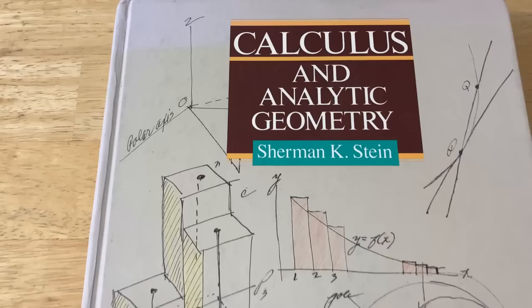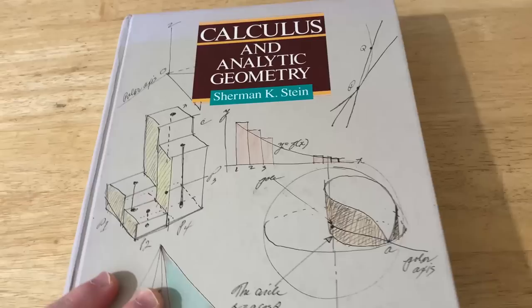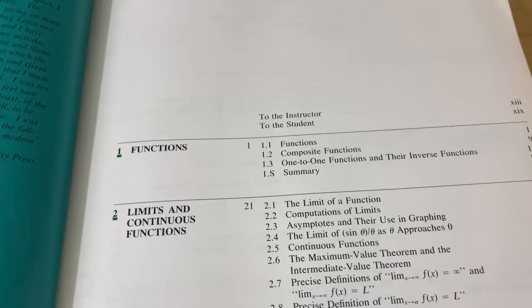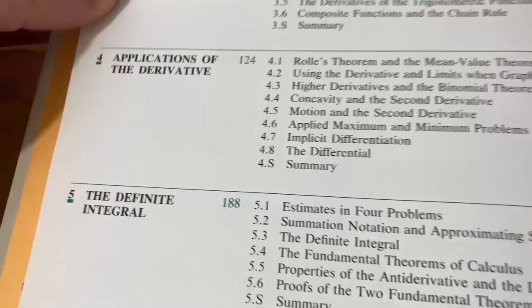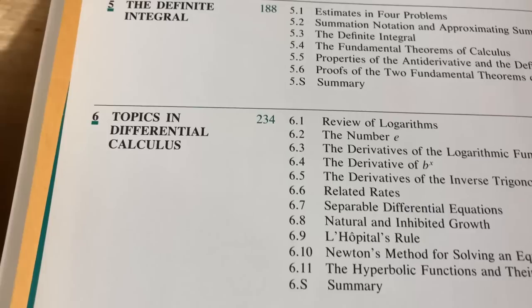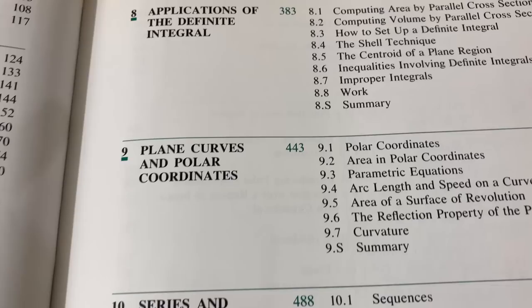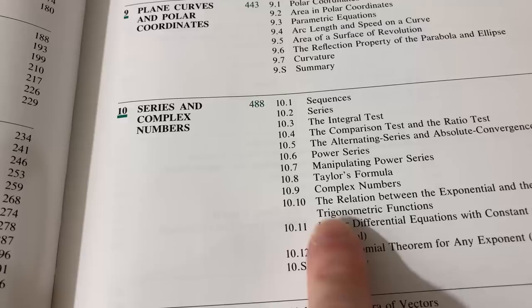Here is the next giant calculus book. This is Calculus and Analytic Geometry by Sherman K. Stein. Look how big that is. What a big thick book. Let's go ahead and open it up and take a brief look at the contents. As expected, the contents are very similar. So functions, limits and continuous functions, the derivative, applications of the derivative, the definite integral, topics and differential calculus, computing antiderivatives, applications of the definite integral, plane curves and polar coordinates, series and complex numbers. So here we go. We've got complex numbers. This is something that's not always found in these big, thick, giant calculus books.